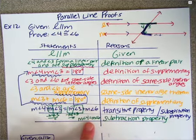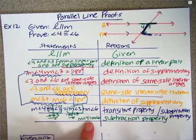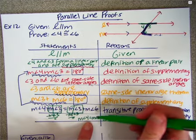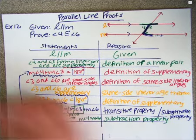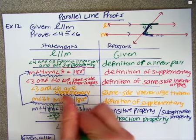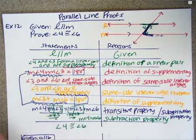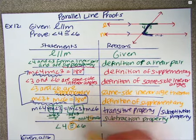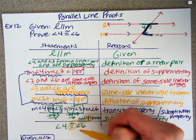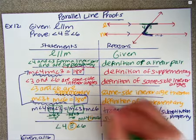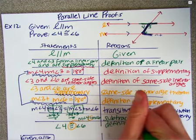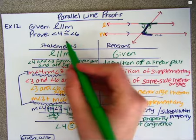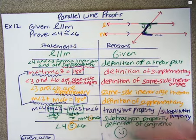I've shown that the measure of angle four equals the measure of angle six, which means they are congruent, because if two angles are congruent their measures must be equal. So angle four is congruent to angle six, by the definition of congruence. We have reached the end of the proof — nice job!